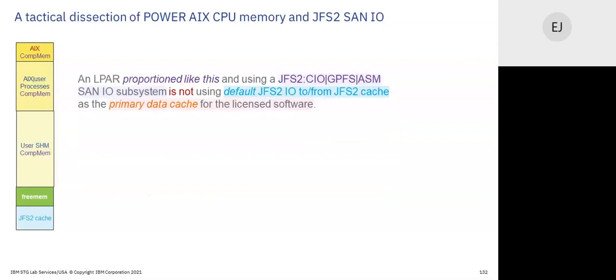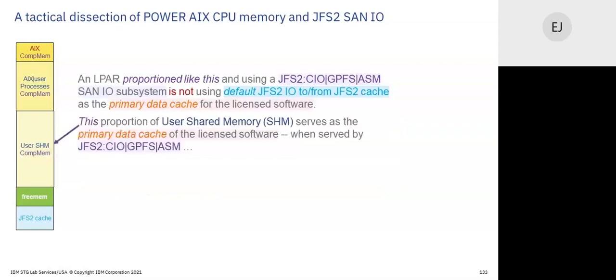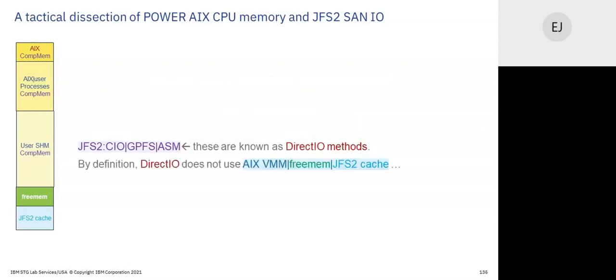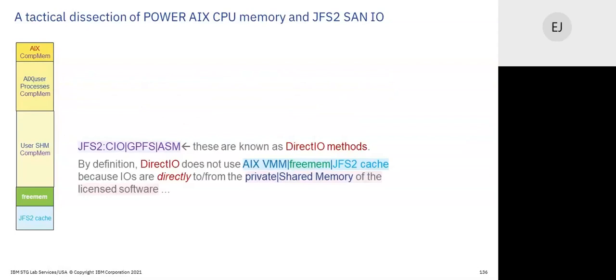When using GPFS or direct I/O methods, we don't have the long path. Storage comes in and goes straight into private or shared memory directly — no VMM overhead to identify and allocate memory for it; the memory is already allocated. This huge proportion of shared memory is a big deal when served by direct I/O methods. Direct I/O goes from SAN storage straight into shared memory — no use of free memory or cache. That's why we call it direct I/O — bypassing the traditional stack for shorter path-length I/O.